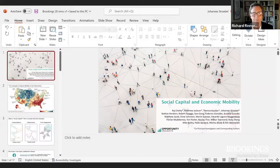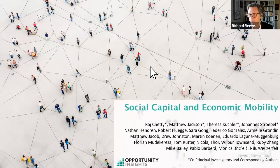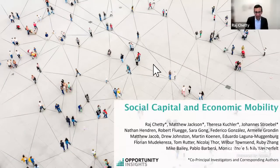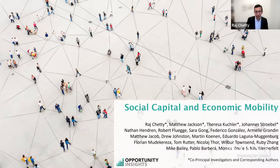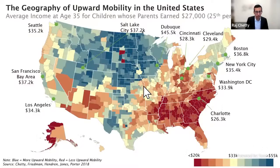With no further ado, we'll get to the main presentation. First we'll hear from Raj and then from Johannes. Thank you so much Richard, and thank you to Brookings for hosting this event. I'd like to start by motivating our conversation by talking about some work we've been doing in our research group at Harvard on the geography of economic mobility. The map shown on screen has occupied our research team's interest for the past several years.